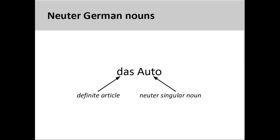The German noun 'Auto,' meaning 'car,' has a neuter grammatical gender, so its definite article is 'das.'